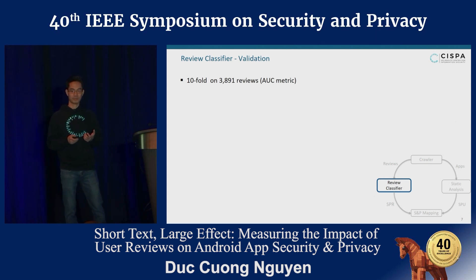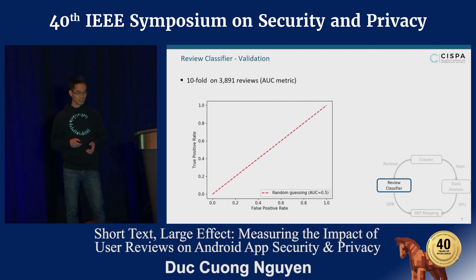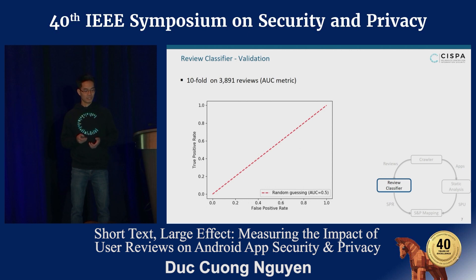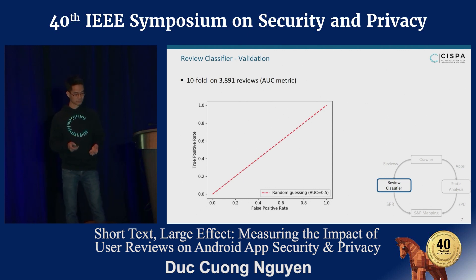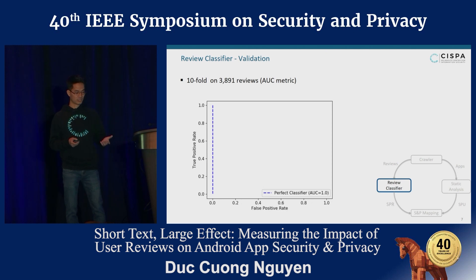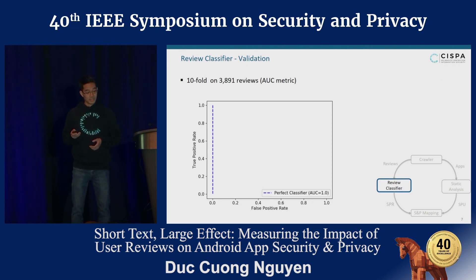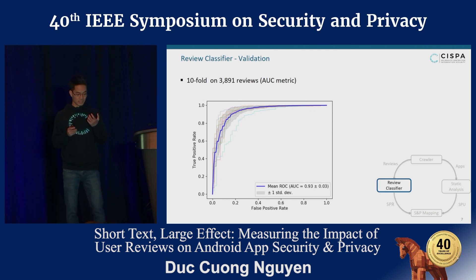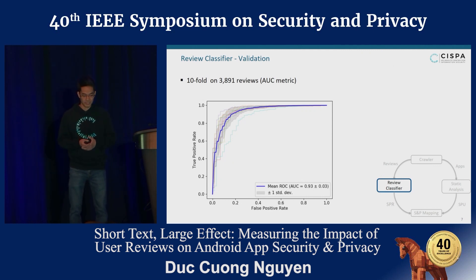To validate our approach, we use ten-fold cross-validation on around 3,900 labeled reviews and use the AUC metric to measure classifier performance. A random guessing classifier has an AUC of 0.5, denoted by the red line, while a perfect classifier would have an AUC of 1.0, denoted by the blue line. Our classifier achieves a mean AUC value of 0.93.